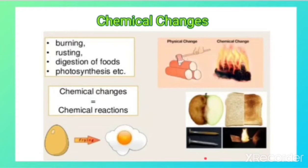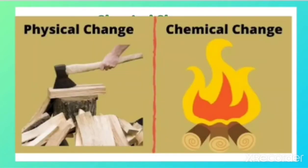Similarly, the rusting of iron results in the formation of a new compound, which makes it a chemical change. All these are changes in which a new substance is formed, and that is why they are called chemical changes, which can also be called chemical reactions.